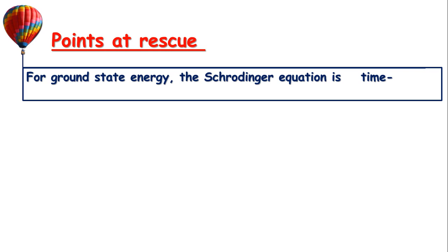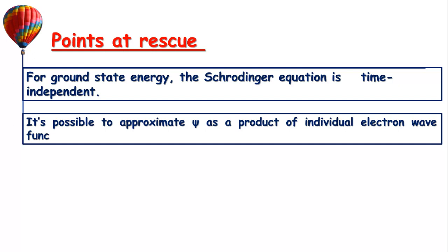Fortunately we have some points at rescue. We have seen that knowing the adiabatic potential energy surface — the ground state energy — is sufficient to tackle the original problem. Now, the ground state energy is time-independent. That's why for the ground state energy the Schrödinger equation is time-independent. Because solving the time-independent Schrödinger equation is a lot easier than the time-dependent one. It is also possible to approximate ψ as a product of individual electron wave functions: ψ = ψ1 · ψ2 · ... · ψn, which is the Hartree product. So you don't always have to deal with summations.